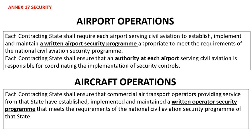Airport operations: each contracting state shall require each airport serving civil aviation to establish, implement, and maintain a written airport security program appropriate to meet the requirements of the national civil aviation security program. Each contracting state shall ensure that an authority at each airport serving civil aviation is responsible for coordinating the implementation of security controls at that airport.